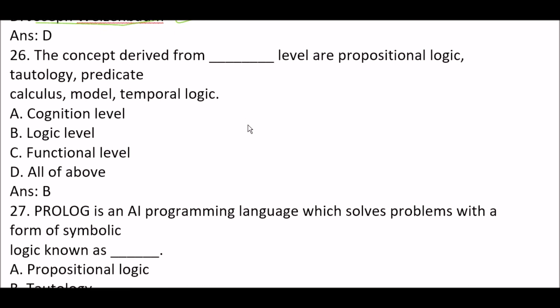Next question: the concepts derived from blank space labels are propositional logic, tautology, predicate calculus, model, and temporal logic. Option A: cognitive label. Option B: logic label. Option C: functional label. Option D: all of the above. The right answer is Option B — logic label. The concepts derived from logic labels are propositional logic, tautology, predicate calculus, model, and temporal logic.